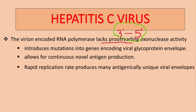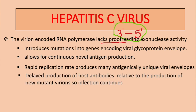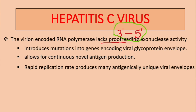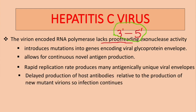Also, rapid replication rate produces many antigenically unique viral envelopes. This leads to delayed production of antibodies relative to the production of new mutant variants. Because of this variation, we don't have vaccines for the Hepatitis C virus.